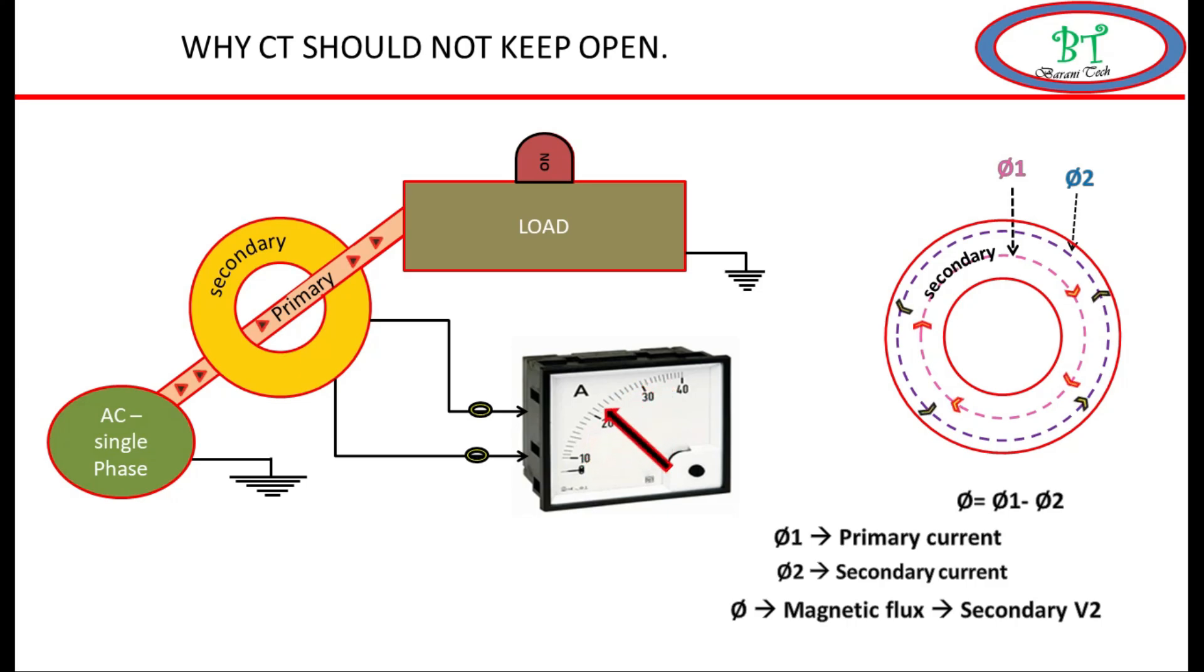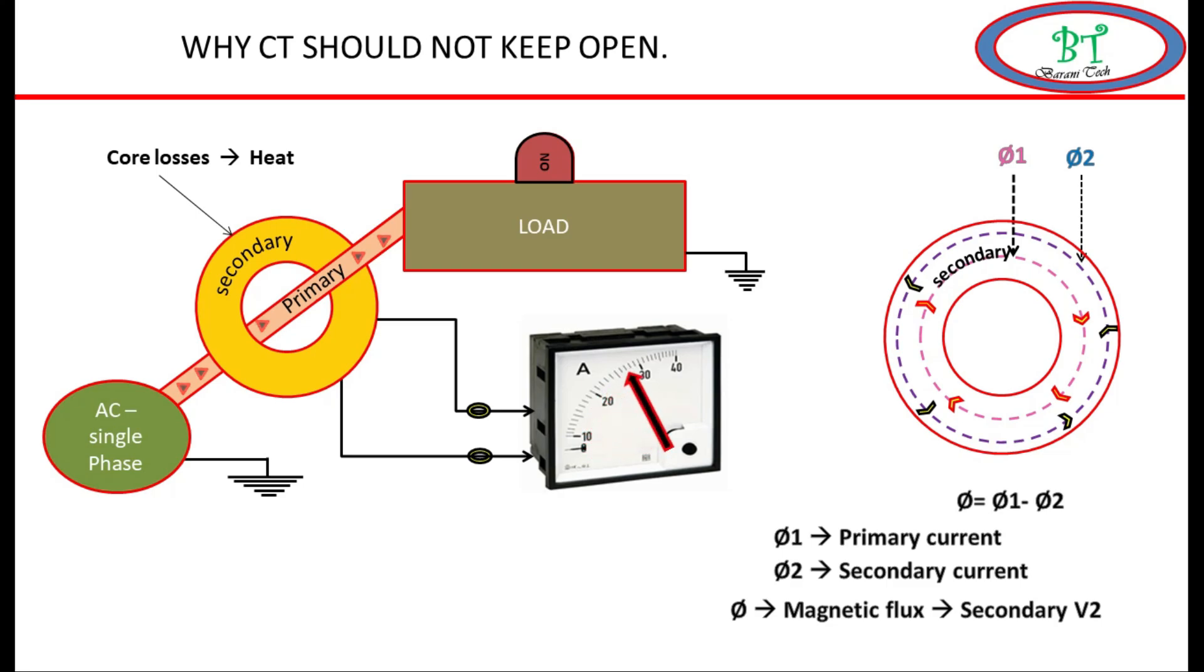Since the secondary is connected with meter circuit, there will be current flow on secondary. Due to this current flow, one opposite flux phi-2 will be produced which opposes the main flux phi-1 and maintains the secondary voltage level by net flux.